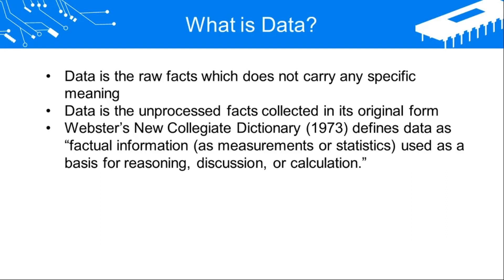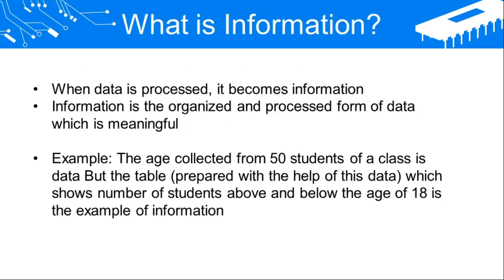Factual information means certain measurements, statistics, numbers, and calculations. When data is processed, it becomes information. Information is the organized and processed form of data which is meaningful. It will not be raw facts and figures; it will be a meaningful output.